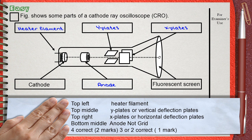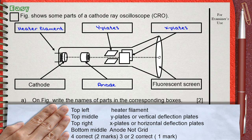But do not say grid—we don't have a grid in this diagram. If all four boxes are correct, you get two marks. If only three or two are correct, you get one mark.